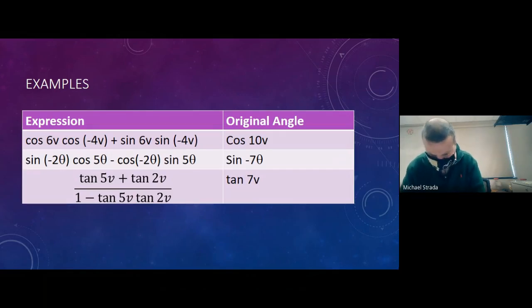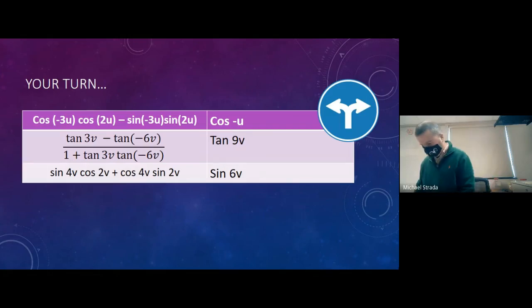And then finally, sine, cosine, cosine, sine tells me it is sine. And if we add those together, we're going to end up with a sine of 6v.